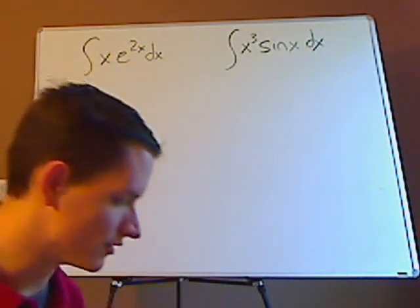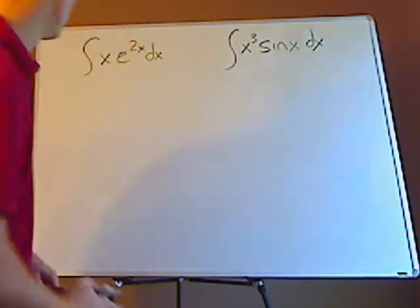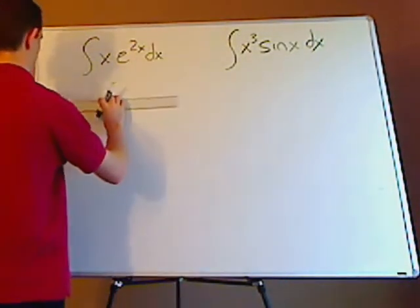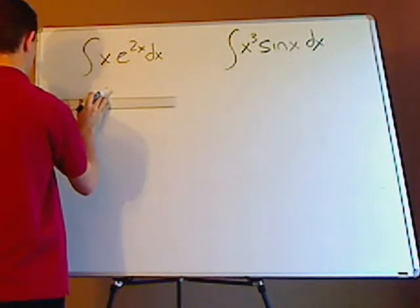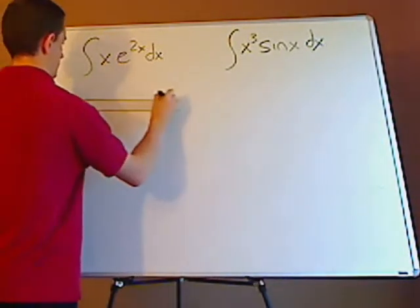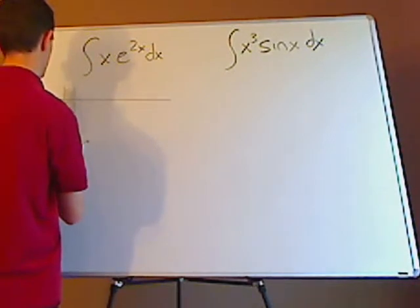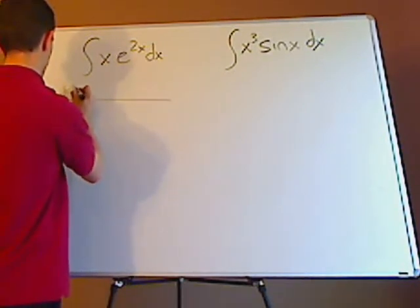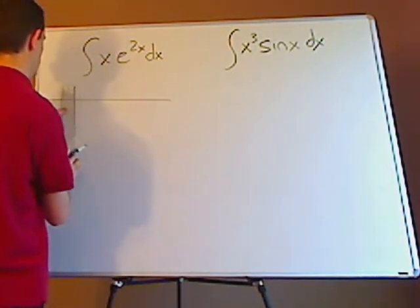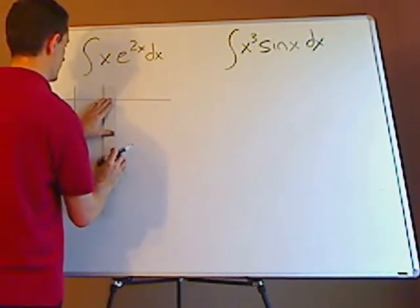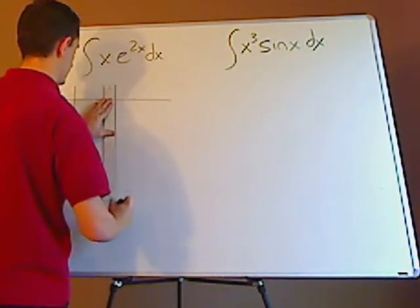Alright, the table is very simple. First you make a table. With the table it's going to have basically three columns: one for the sign, one for the derivative, and one for the integral.